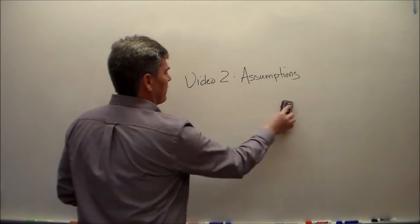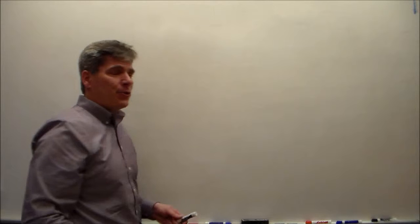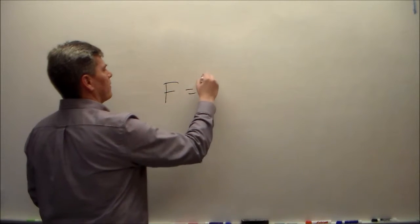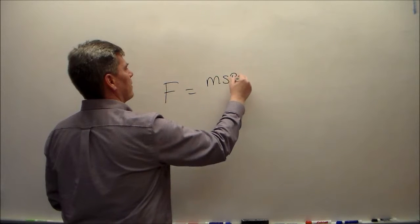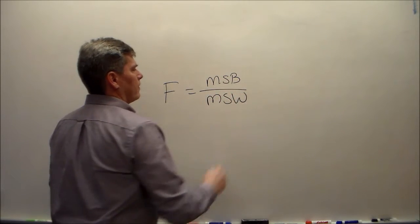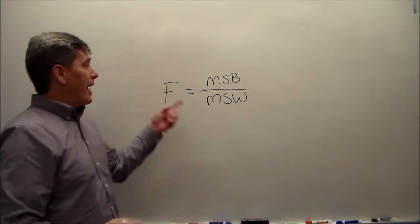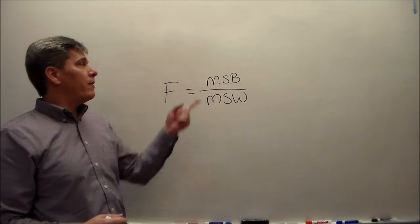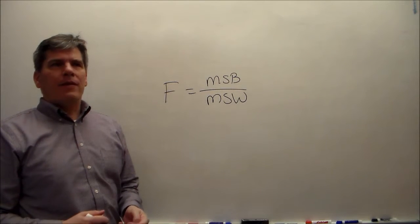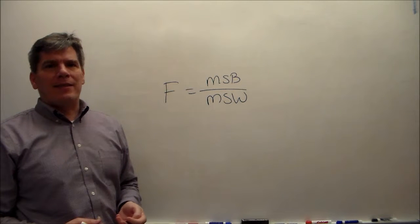Why do we need those? Here's why. This is our test statistic for the analysis of variance. The F test statistic is the ratio of the mean squared between over the mean squared within. This mean squared between and this mean squared within are two types of variances.